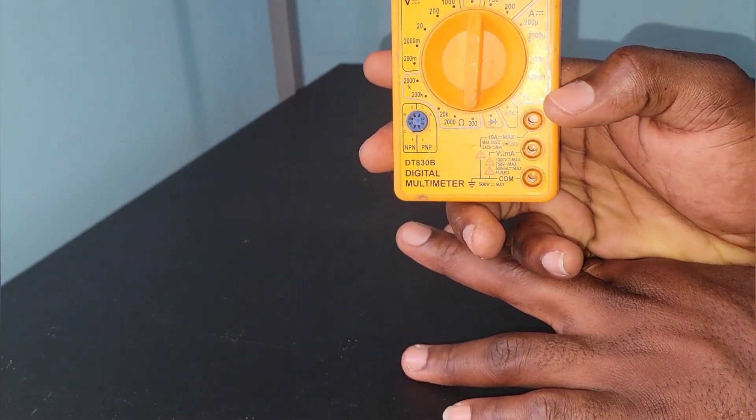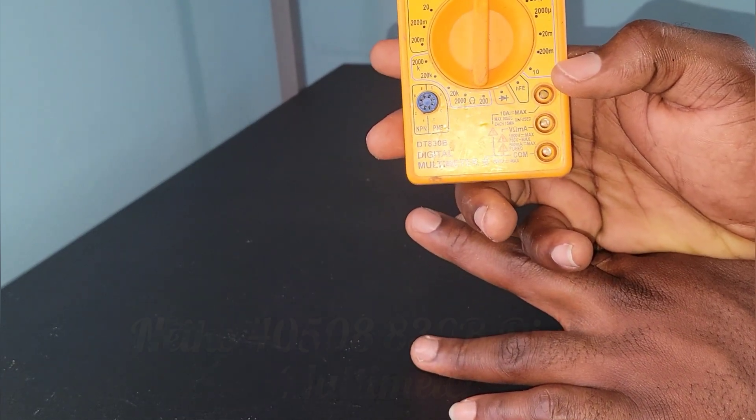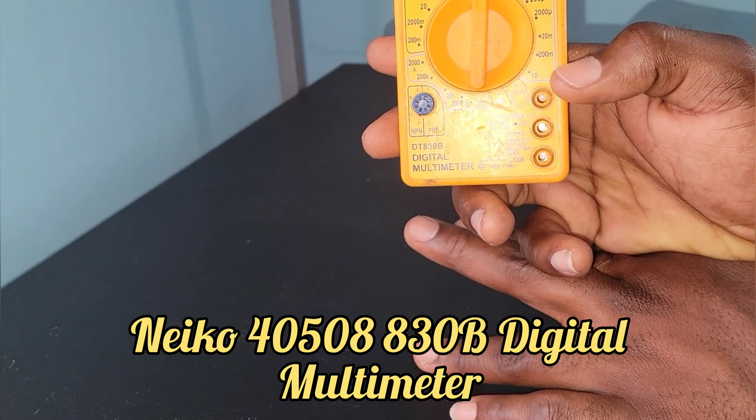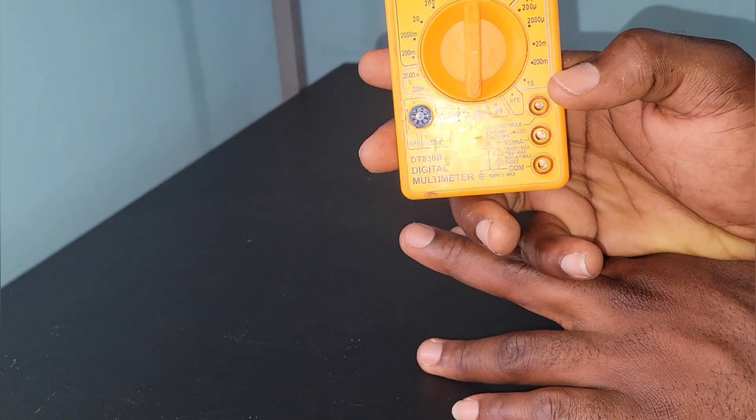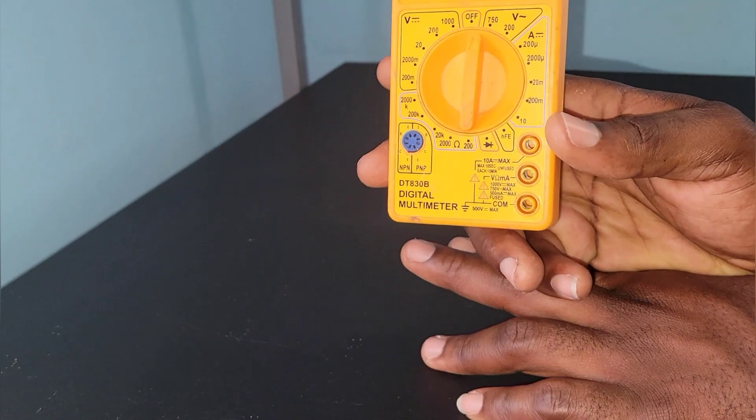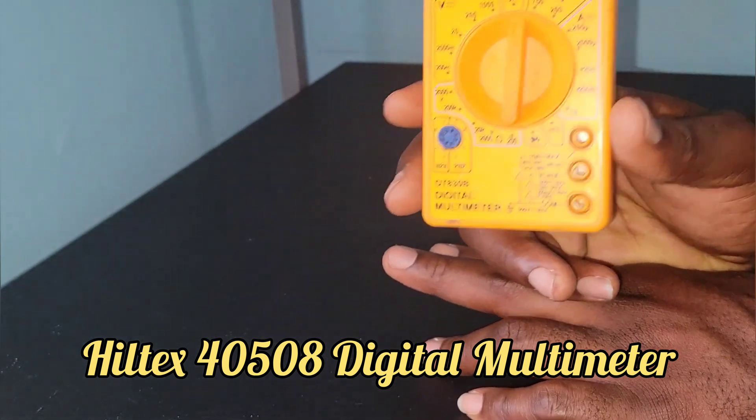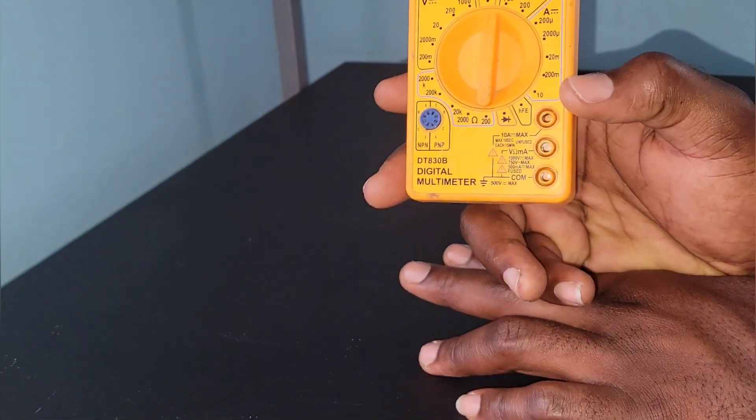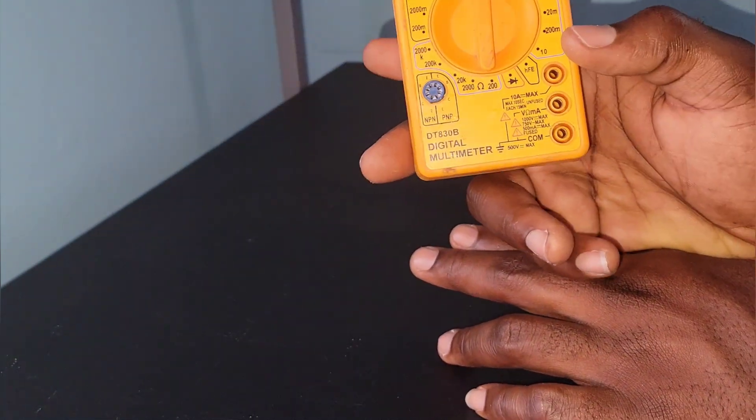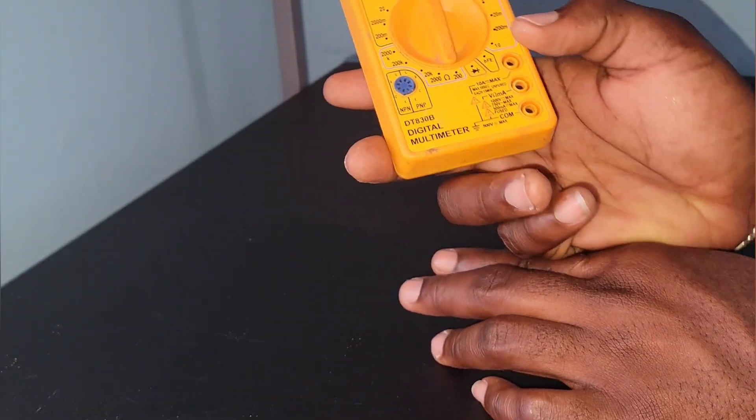When I bought this, the name of it was Niko 405088 30D multimeter. I went and did some check and realized that the name for the same multimeter is now Illtext 4050 8 digital multimeter. At the time I bought it Amazon was the seller, but now the seller is Niko with the name as Illtext. Yeah, I know it's a lot of confusion.